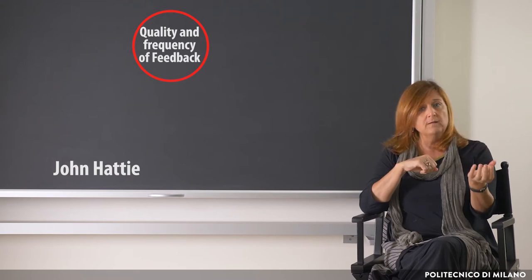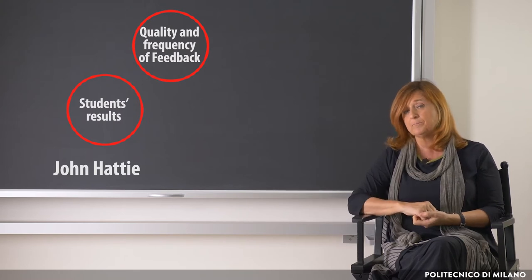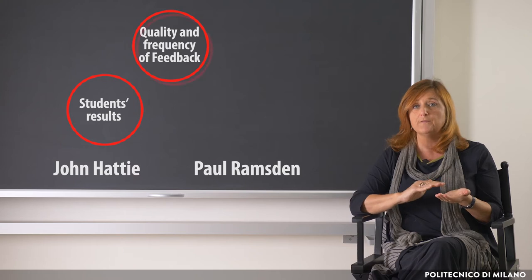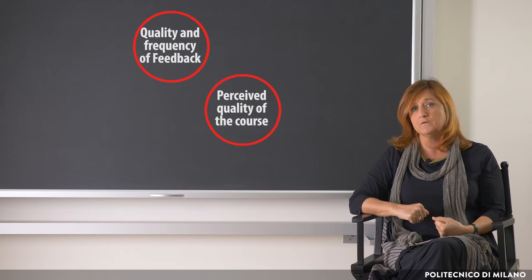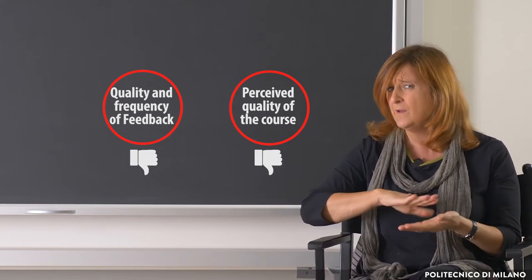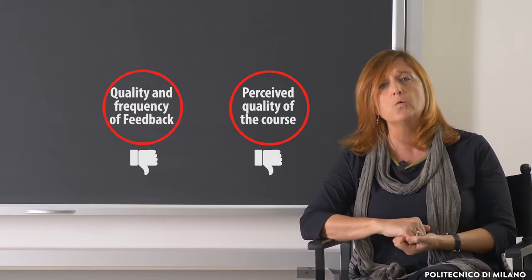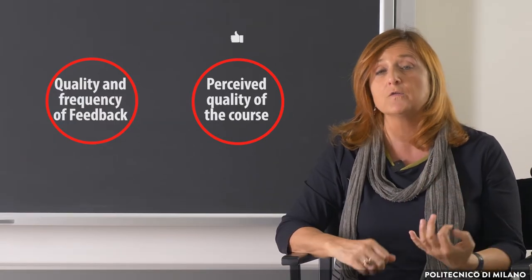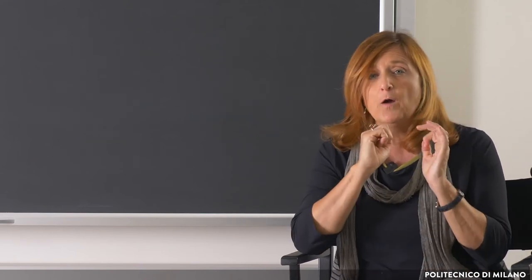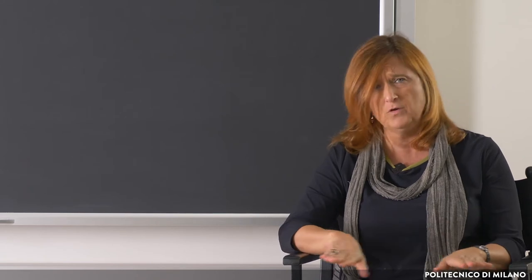A few decades ago, Hattie demonstrated the strong correlation between the quality and the frequency of the feedback and the results of students. More recently, Ramstein highlighted how there is a very strong correlation between quality and frequency of feedback and the perceived quality of the course. In practice, every time a course is negatively considered by students, there is also a negative specific perception in terms of quality of feedback, and vice versa. Every time a course is evaluated positively, we have a positive assessment of the quality of the feedback. The topic of feedback seems to be the only stable, significant marker that identifies with a high level of likelihood which courses are perceived positively and negatively by students.